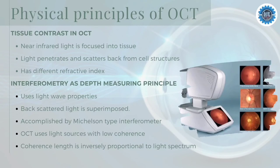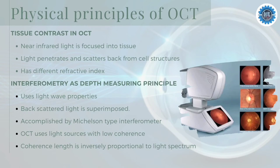The first physical principle of OCT is Tissue Contrast. Optical Coherence Tomography displays cross-sectional images of biological tissue. A near-infrared light is moderately focused into the tissue structures, where it penetrates and scatters back from cell structures like nuclei, mitochondria, membranes, or collagen fibrils. These structures have a different index of refraction than the surrounding layer, forming inhomogeneities in the refractive index of the tissue, which gives rise to scattering. The back-scattered light is then analyzed in the OCT system.